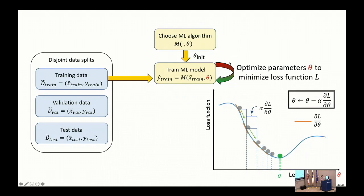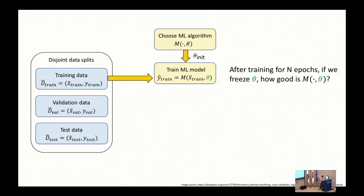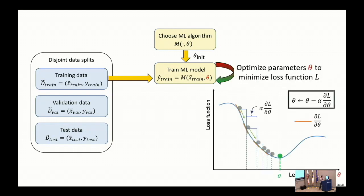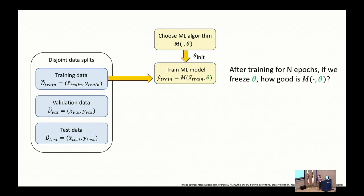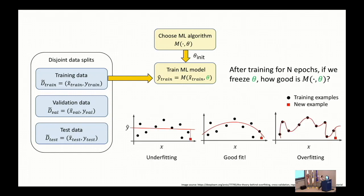Given your training set, you expose instances to your algorithm — that's called a learning epoch. You expose the training data multiple times, tuning your theta, hoping you're close to the optimum. Once you think your loss has converged, you freeze the parameters. Then you ask: how good is the model? The model is just a mathematical function that takes x and the frozen theta to predict y. This is where concepts like underfitting and overfitting become relevant.